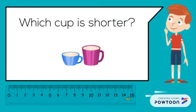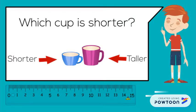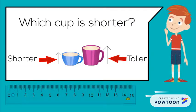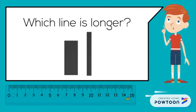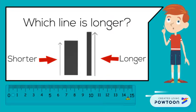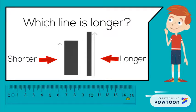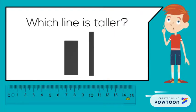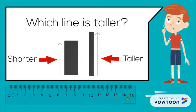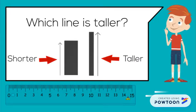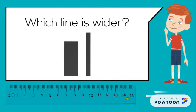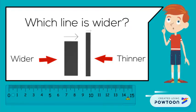Which cup is shorter? The cup on the left is shorter. Which line is longer? The line on the right is longer. Which line is taller? The line on the right is also taller. Which line is wider? The line on the left is wider.